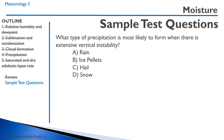Question: what type of precipitation is most likely to form when there is extensive vertical instability? The correct answer is hail. The precipitation falls and gets brought back up by vertical updrafts, at which point more moisture is accreted onto the existing hail particles. The more instability and the more updrafts we have, the larger the hail we end up getting.